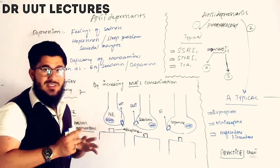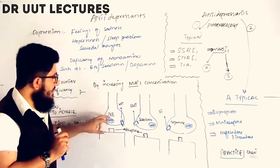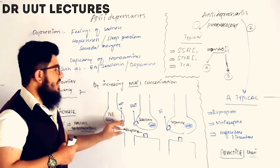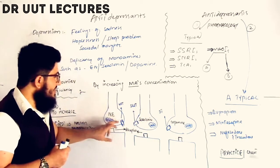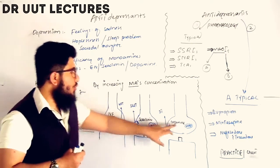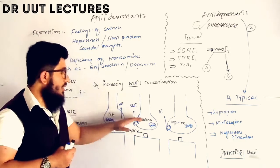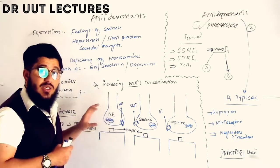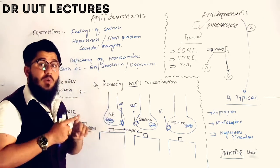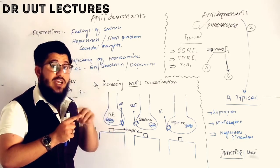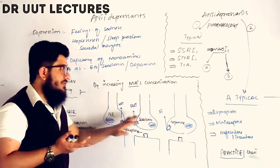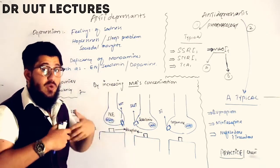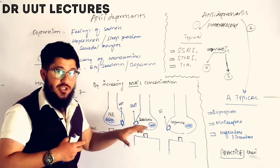When norepinephrine is released into the synapse, it may be reuptaken by the norepinephrine transporter. The same type of transporter exists for serotonin and dopamine. When these neurotransmitters are reuptaken back into the neuron, enzymes inside known as monoamine oxidase (MAO) act on them. MAO breaks down and degrades these monoamines — norepinephrine, serotonin, and dopamine.